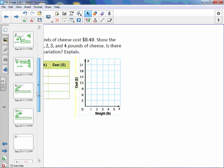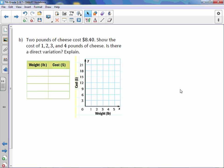Letter B. Just check one more after this. Okay. Two pounds of cheese cost $8.40. Show the cost for 1, 2, 3, and 4 pounds of cheese. So 1, 2, 3, and 4 pounds of cheese. Is there a direct variation? Explain.